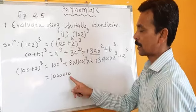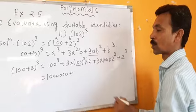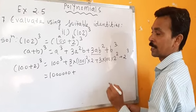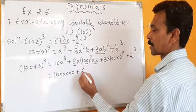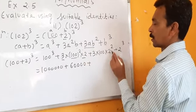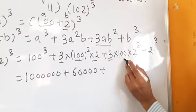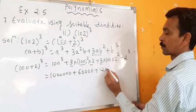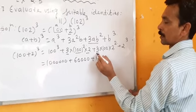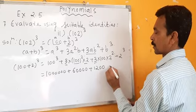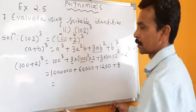100 cube is 1,000,000. 100 squared is 10,000, and 10,000 into 3 into 2 is 60,000. Plus 2 squared is 4, so 4 into 3 into 100 is 1,200. Plus 2 cube is 8.